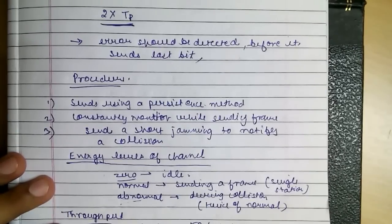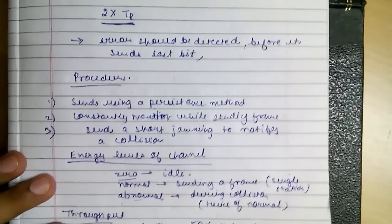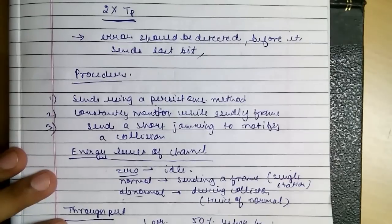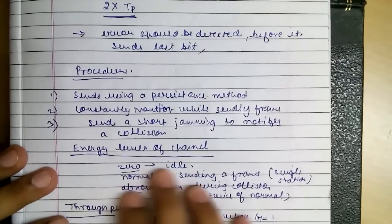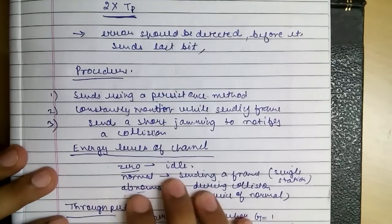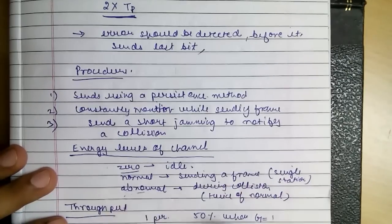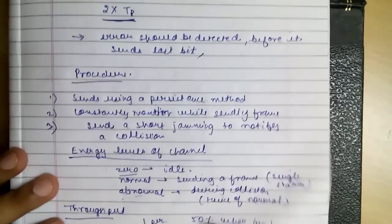In the previous video we discussed CSMA with collision detection. In collision detection we were able to detect because of the measurement of energy levels. If it was zero, the channel was considered idle. Normal when a single frame is going on, and abnormal during collision. So this approach is okay when we have wired connection.